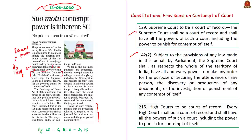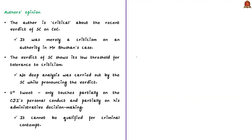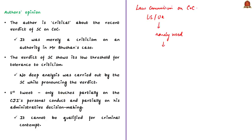Regarding how the concept of contempt of court is used in different parts of the world — according to the Law Commission report, contempt of court exists in many countries like the United States and United Kingdom. But it is rarely used by these countries, meaning that even though the judicial authorities are criticized by citizens, they are rarely punished by the court.